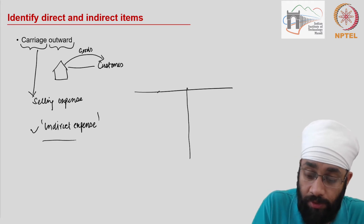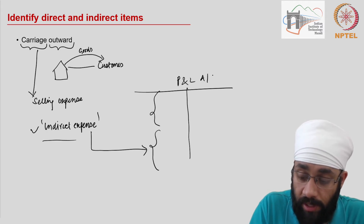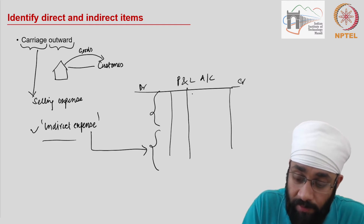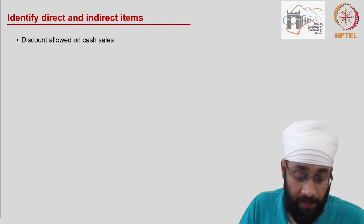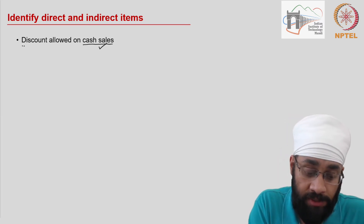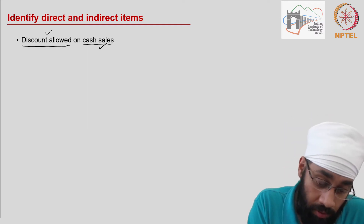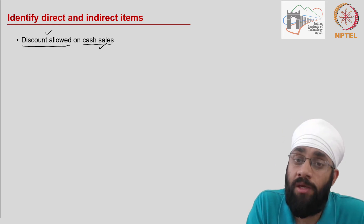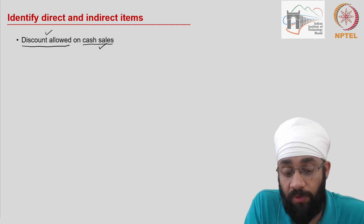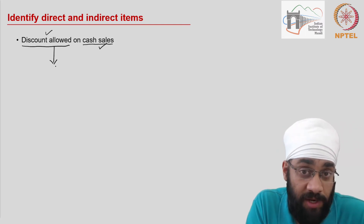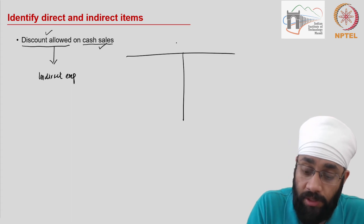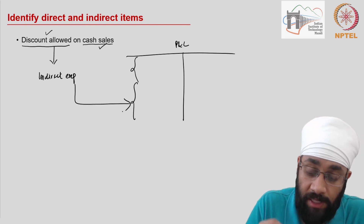Carriage outward will be shown in the second half of the profit and loss account. This T-shape represents the account with a credit side and debit side, along with amount and date columns. The next item is discount allowed on cash sales. Discount is allowed to incentivize customers to pay or to sell more quantity by reducing the price. This is clearly a sales strategy and a selling expense, so we categorize it as an indirect expense, shown in the second half of the profit and loss account.